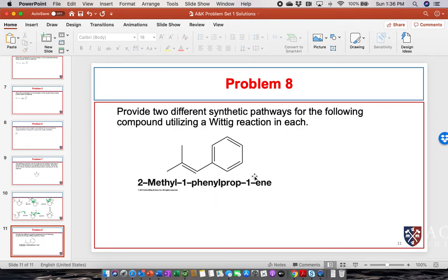I haven't done this yet, but let's see if we can solve this reaction. I'm a student and I'm working at home. This is a problem set. I was asked to provide two different synthetic pathways for the following compound utilizing a Wittig reaction in each pathway.